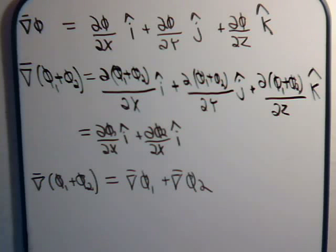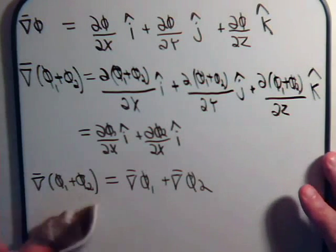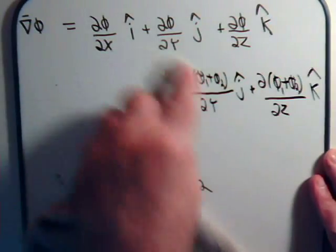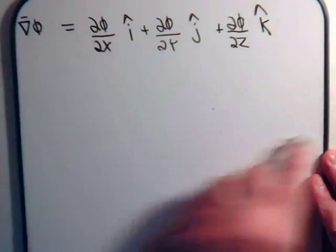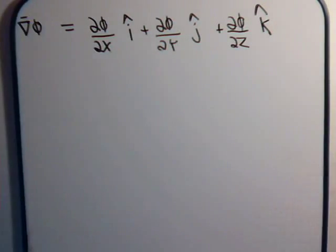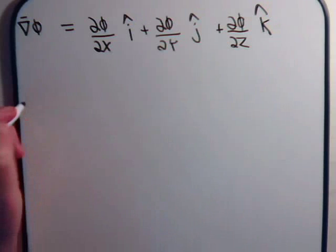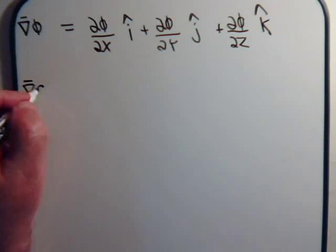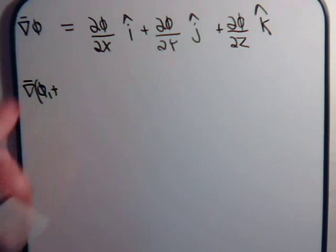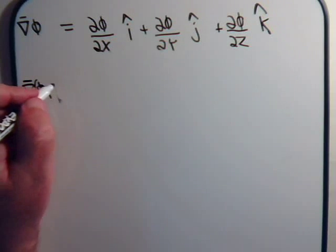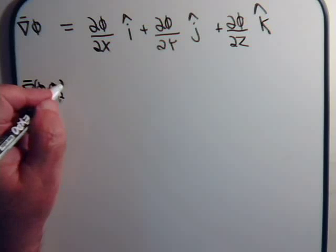That's pretty straightforward. Now let's consider what happens if we have scalar functions multiplied together — let's take a quick look at that and see where it leads us. We might have the del operator operating on p1 times p2.